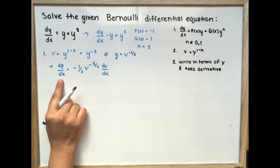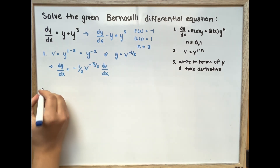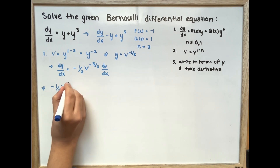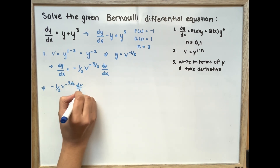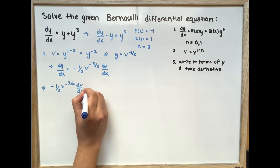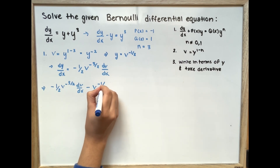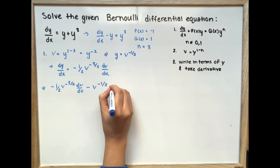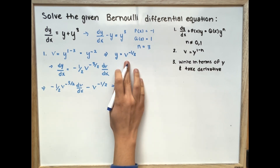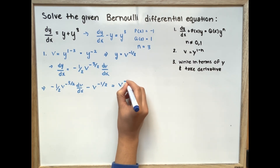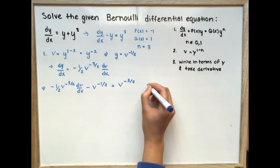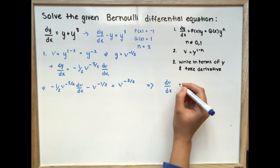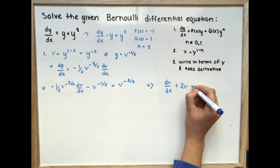Substituting in, that gives us negative one half times v to the power of negative 3/2 times dv/dx, minus v to the power of negative one half, equal to v to the power of negative 3/2. Simplifying this equation, we get dv/dx plus 2v is equal to negative 2.